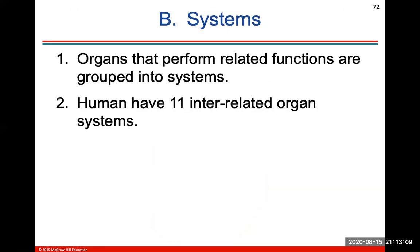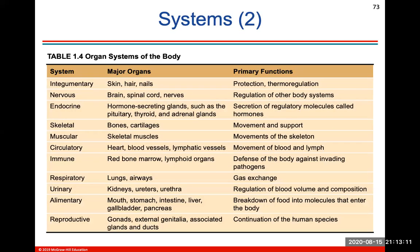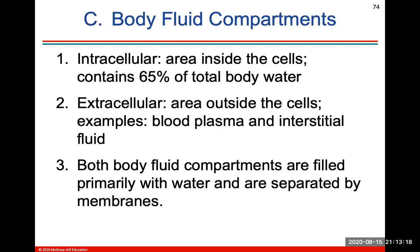Humans have 11 interrelated organ systems. There's a review chart of the 11 body systems, the major organs involved, and their primary functions. Body fluid compartments: intracellular is the area inside the cells, and extracellular is the area outside the cells. That's our first introduction to this physiology course — as you can see, it's a lot of anatomy review. We'll start to get into more physiology in the following chapters, so we'll see you for Chapter 2.